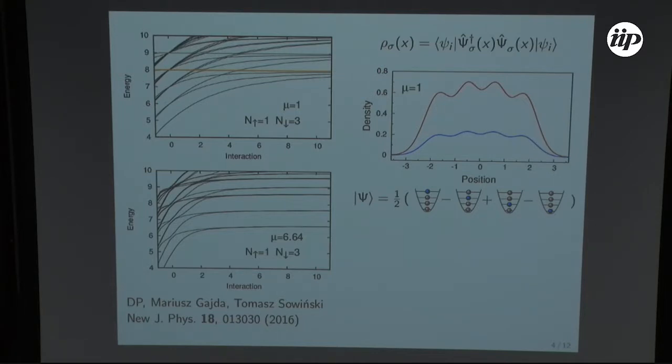And you cannot build such totally anti-symmetric wave function if the orbitals of one species are narrower. So this is why there are no Girardeau states when you have mass imbalance.